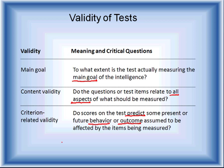The validity of a test requires a clear main goal, with questions focused on that goal. It must be valid for all aspects of what is to be measured. Criterion-related validity asks whether scores predict some present or future behavior — for example, if people do well on the SAT, does that validly predict they will do well in college? These are important questions to consider.